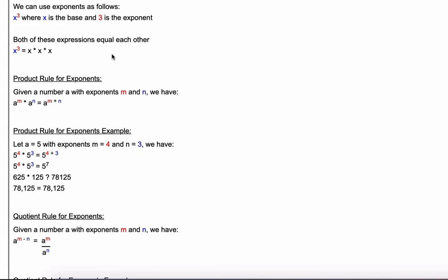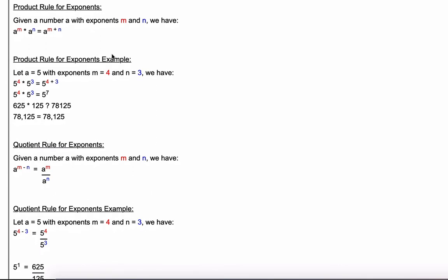Now that we've covered the basics of exponents, let's walk through rules you can use to simplify your math. First, the product rule for exponents: given a number a with exponents m and n, a to the m times a to the n equals a raised to the m plus n. When you multiply a number by itself with different exponents, you can add the exponents together.